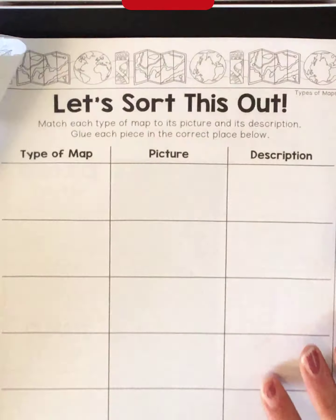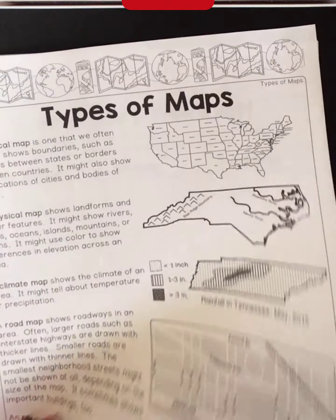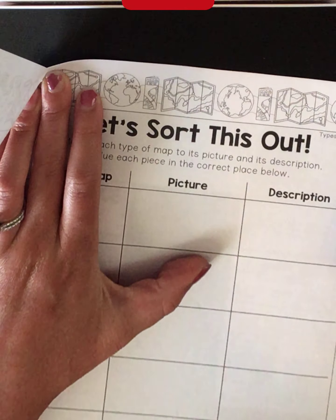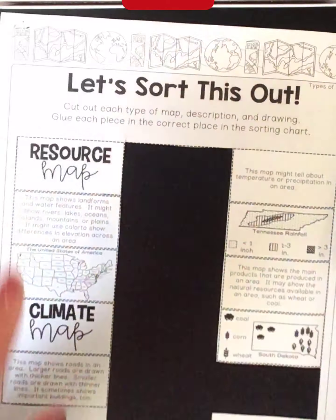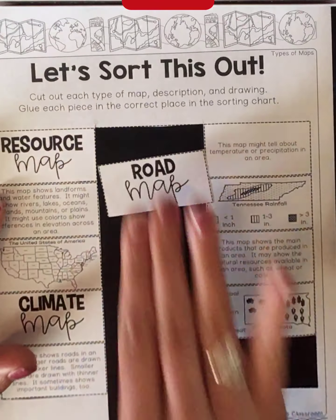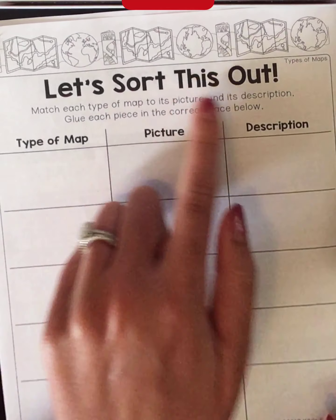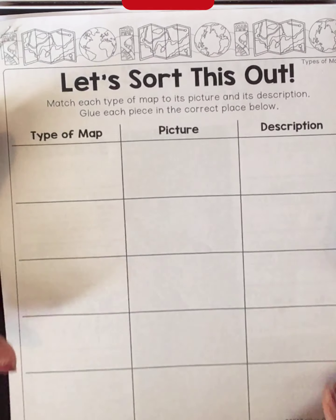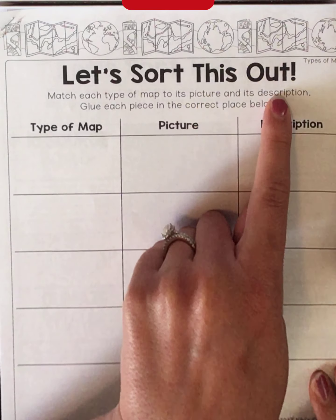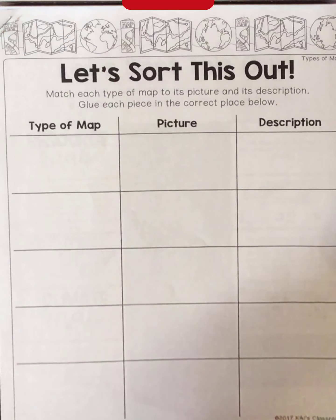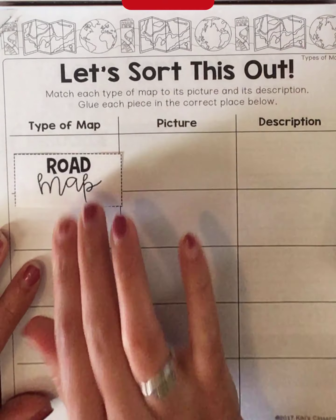So I'm just going to quickly explain what this assignment looks like. Know that there are three pages and you can rip them apart. The top page is a guide as you finish your assignment. You're going to cut out all of the squares along the dotted lines, then reorganize and sort them — matching each type of map to its picture and its description, then glue each piece in the correct place.